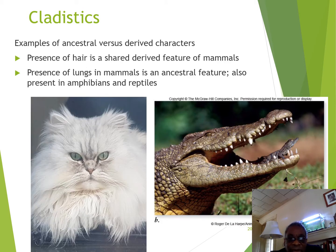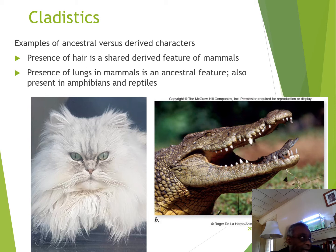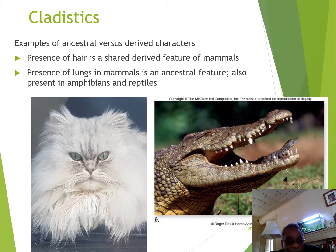As an example of ancestral versus derived characteristics: the presence of hair in mammals is a shared derived feature — a synapomorphy. The presence of lungs in mammals is an ancestral feature, because all mammals have lungs but so do all reptiles and most amphibians. It's a shared characteristic that goes back further than the common ancestor for mammals.